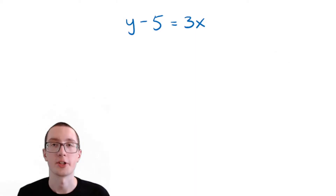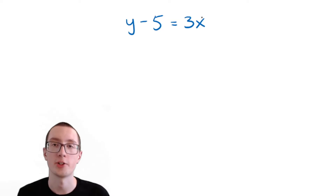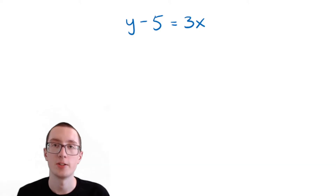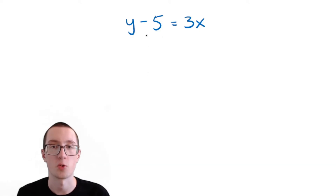Here's how to figure out if an equation is linear in just five minutes. Here's our first example. We have an equation here, and we need to figure out if this is linear or not linear. Linear basically just means that if we were to graph this equation, it would be a straight line. If it would make a curve or something, then that means not linear.